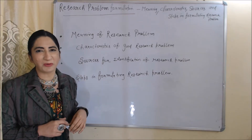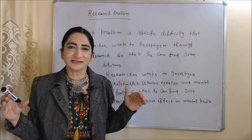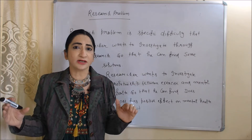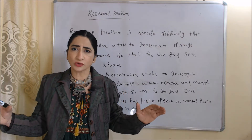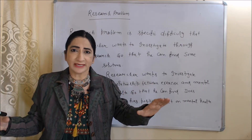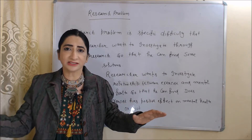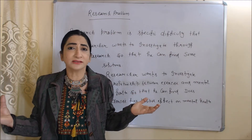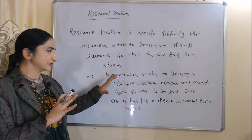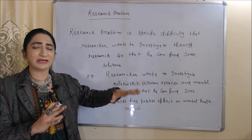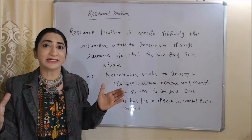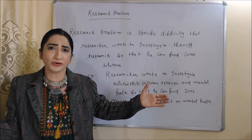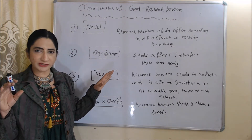So what is a research problem? A research problem is a specific difficulty that a researcher wants to investigate through research so that he can find some solutions. For example, a researcher wants to investigate the relationship between exercise and mental health to find out whether exercise has positive effects on mental health or not.